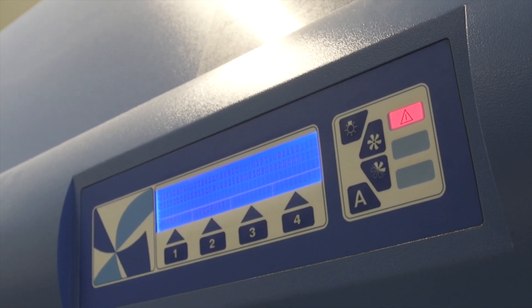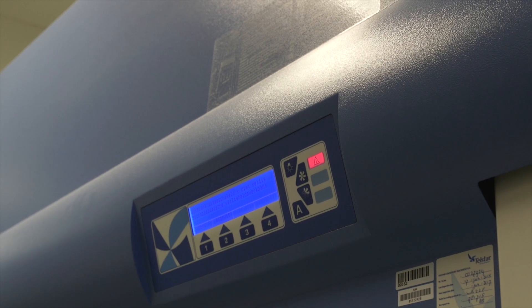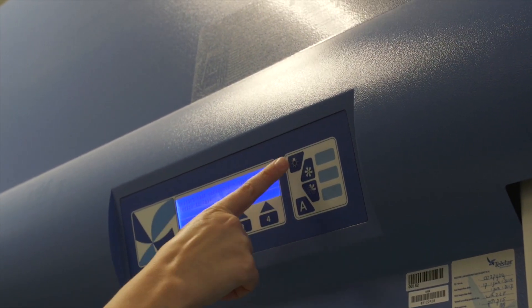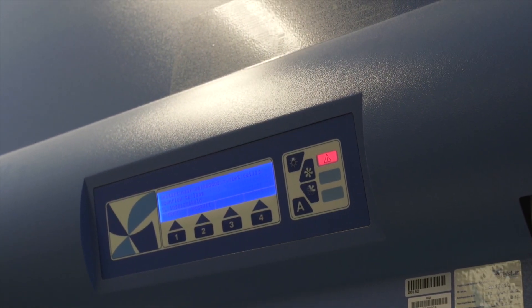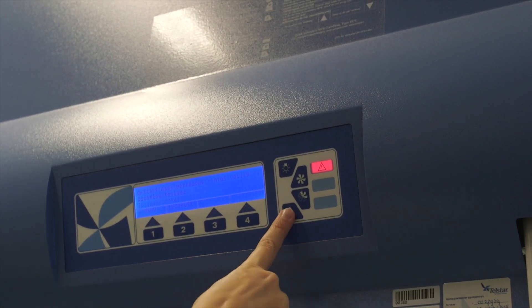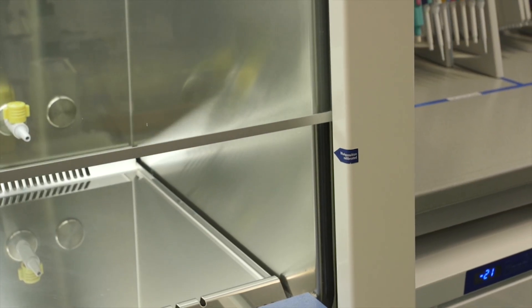The cells are grown under sterile conditions. For this, we use a biological safety cabinet, also called a flow cabinet. Turn on the flow cabinet with this button and the lamp with this button. You will hear an alarm because the airflow is not yet ready. Turn off the alarm with this button. Make sure the screen is adjusted to the correct height.